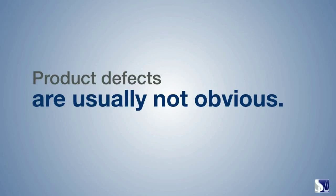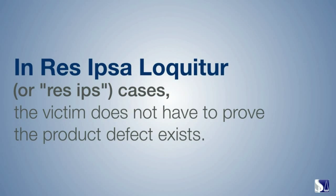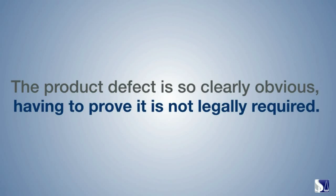Some product liability cases are exempt from the difficult and expensive pretrial discovery process. In Res Ipsa Loquitur cases, the victim does not have to prove the product defect exists. Res Ipsa Loquitur is Latin for 'the thing speaks for itself.' It means that the product defect is so clearly obvious that having to prove its existence is not legally required. Under Res Ipsa, if a reasonable person can look at a product and, without any other proof, recognize the product is clearly defective, then strict liability immediately applies.